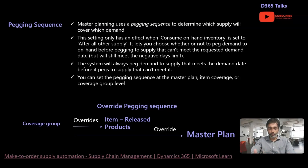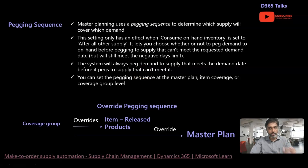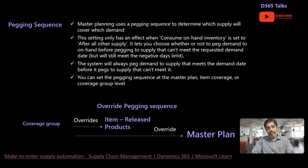The system checks whether you can meet the demand from upcoming supplies or consume directly from available stock. The system always tries to peg demand to supply that can meet the demand date before picking supply that can't meet it. This is where the concept of negative days also comes into picture — if supplies can't meet the demand, the system takes the next appropriate sequence to meet demand.